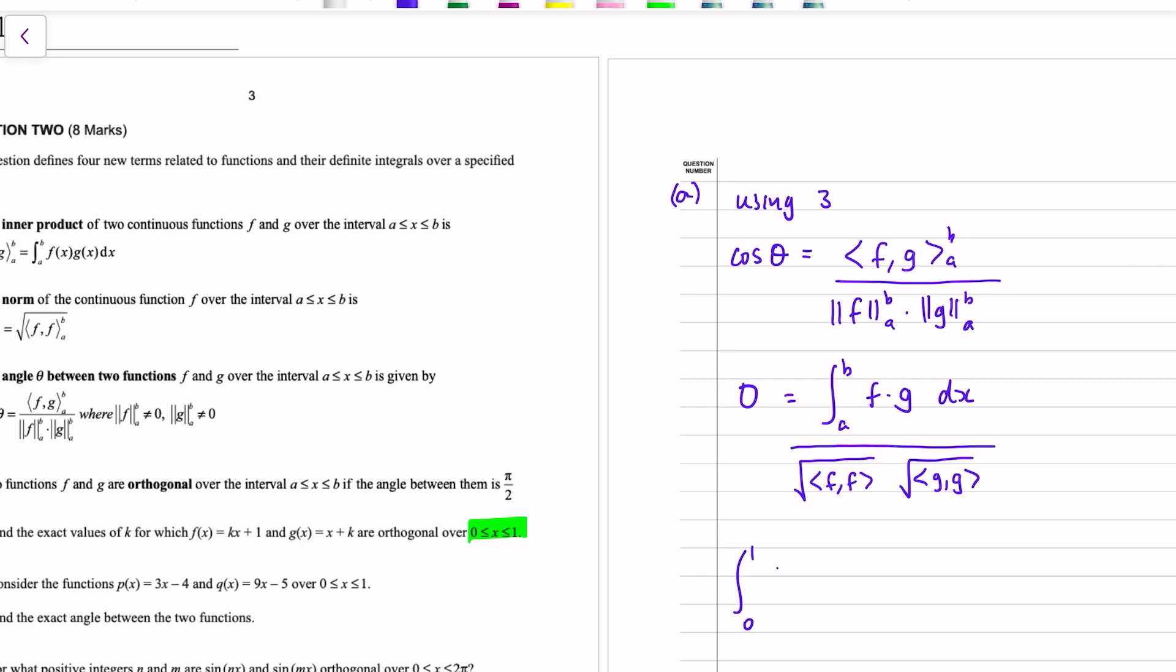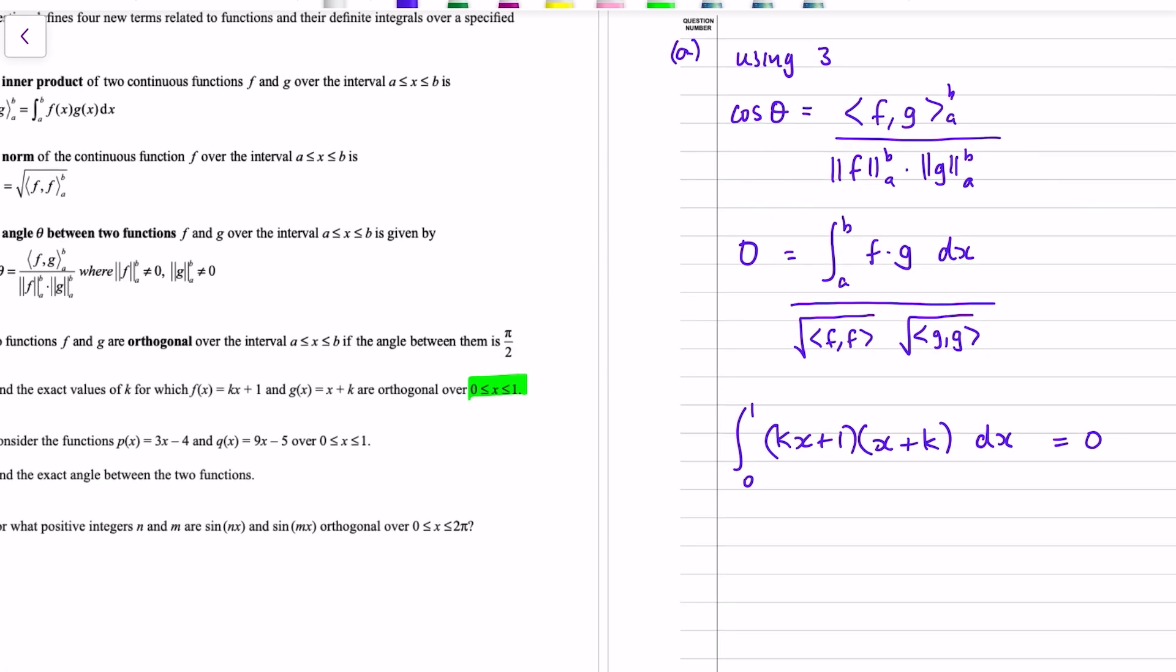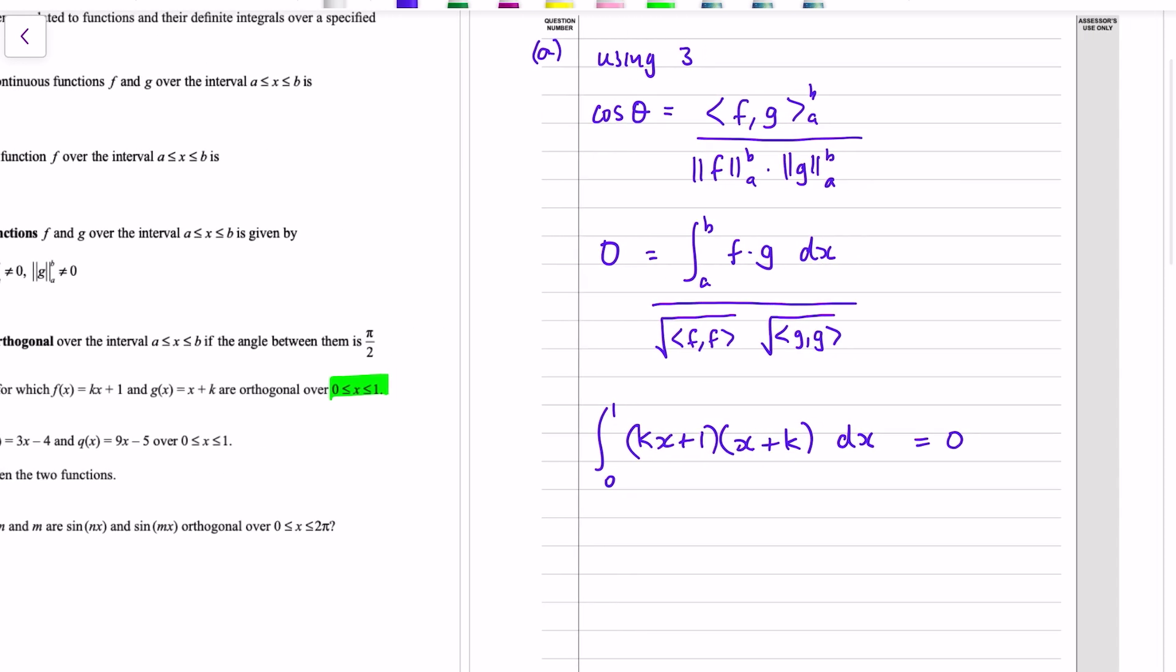The norm's just the inner product of f with itself. I'm just going to write it like this though. Because I don't need to evaluate this stuff. Okay, we're making this equal to 0 for orthogonality, and so the numerator, assuming that the norms aren't 0 and the denominator isn't 0, we just need to set this first integral equal to 0.